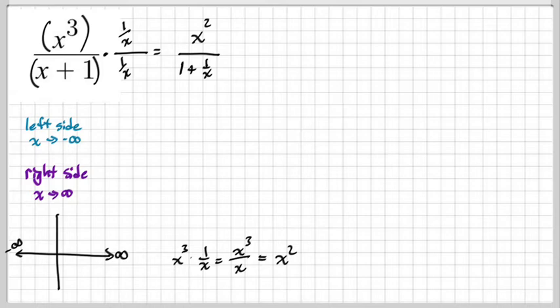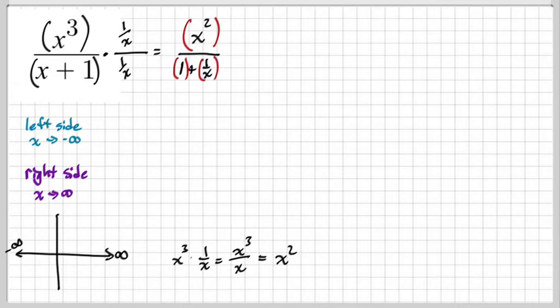We're going to consider the left side and the right side of this graph, and look at each of these parts separately. You guys know what these graphs look like — we'll consider each of them. Here, I'll give you a graph of each of them. This is x squared — this is the parent right here.